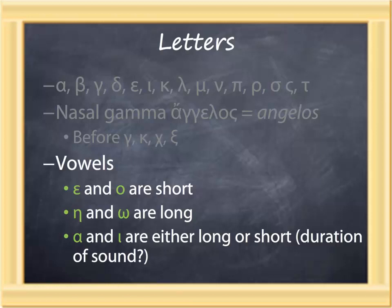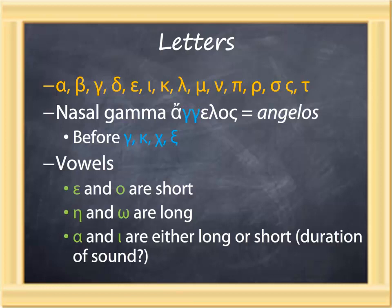Vowels in Greek are enunciated differently. Epsilon and omicron are short, and short generally means quick sounds. Eta and omega are always long, and their tone is held a bit longer. Alpha and iota can either be long or short, and the duration of the sound may be an indicator, though we're not going to press it too hard in this class. So while you are helped by familiarity with the sounds of English vowels and consonants, there are some distinctives in the behavior of Greek.